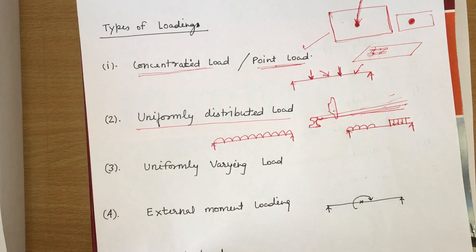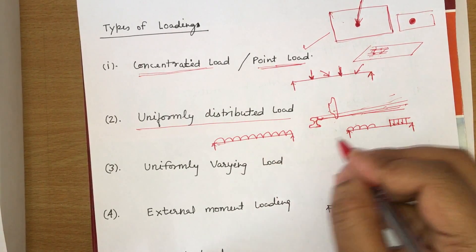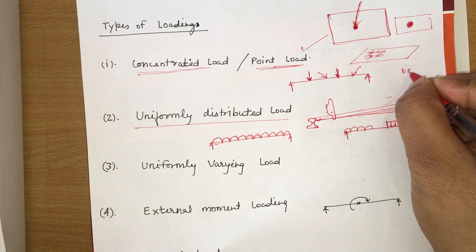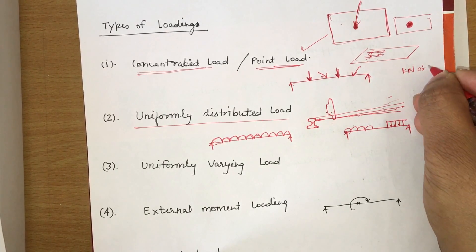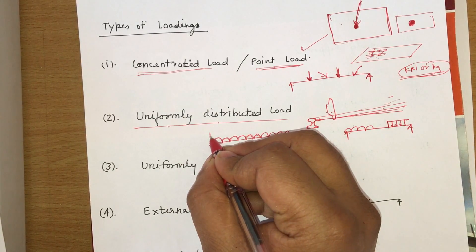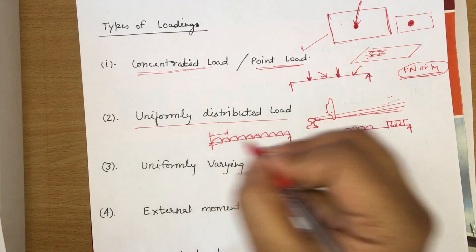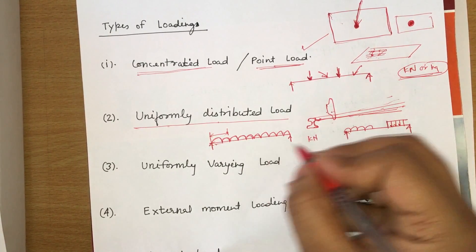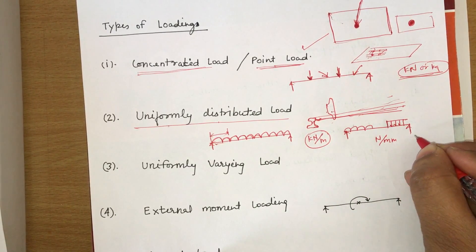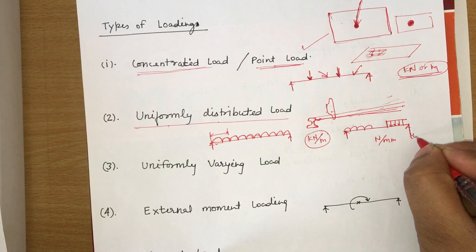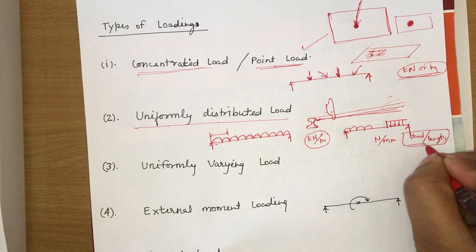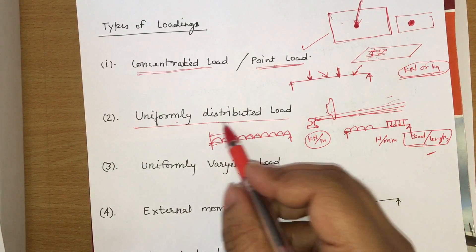This is the symbol of uniformly distributed load — uniformly distributed over the whole area or a part of the length. The unit of this load is generally kilonewton per meter, or newton per mm — that is, load per unit length. So the unit is kilonewton per meter.